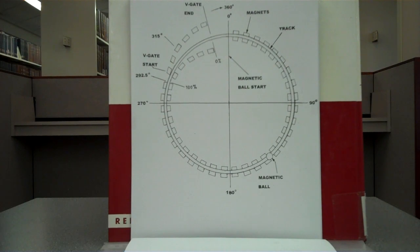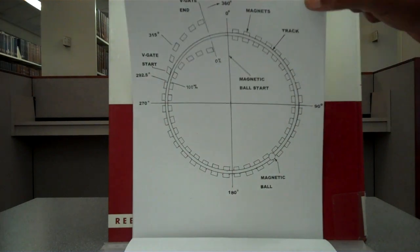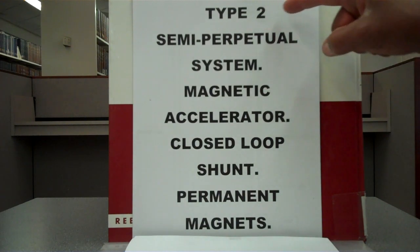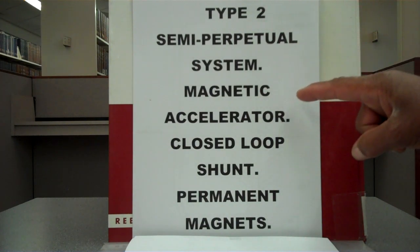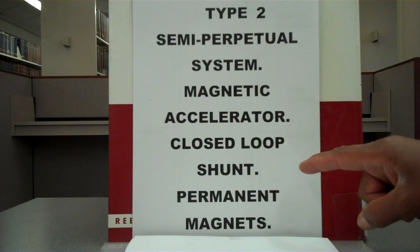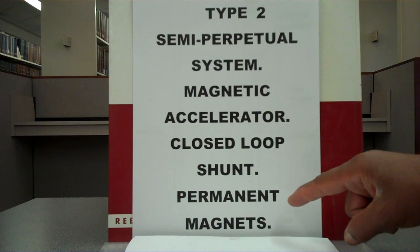Type 2 Semi-Perpetual System does not use a V-gate, but allows the projectile to leave the magnetic accelerator. It's a magnetic accelerator, a closed loop shunt made up of permanent magnets.